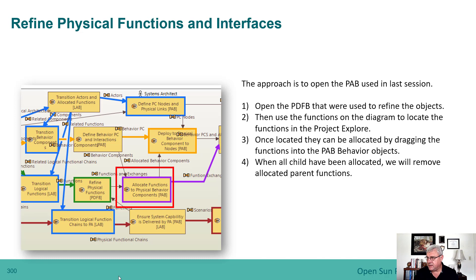Then we're going to open up the PDFB that was used to refine the objects, and use the functions on that diagram to locate the functions in the Project Explorer. That can be done just by doing a right mouse click operation. Once they're located we can allocate them by dragging them to the behavior objects. And when all the children have been allocated, we will remove the parent allocation from the parent function from the allocated behavior objects that we did in the last session.